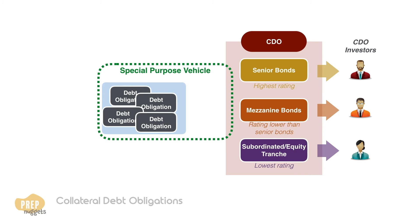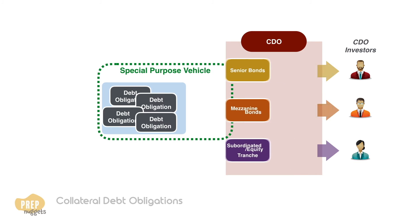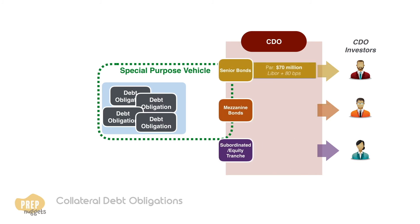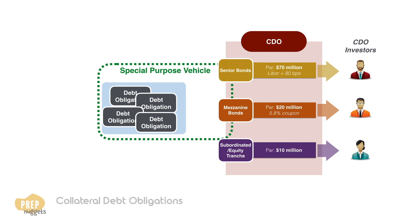A typical CDO structure is to issue a floating rate senior tranche that is 70–80% of the total issue and a smaller mezzanine tranche that pays a fixed rate of interest. For example, the par value of the senior bonds can be $70 million with a floating coupon rate based on LIBOR plus 80 basis points. The mezzanine bonds can be $20 million in par and pay a fixed rate of 5.8% coupons. The equity tranche can have $10 million in principal.